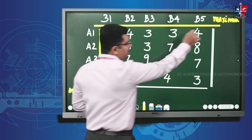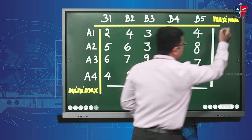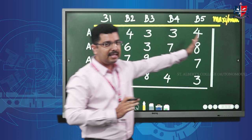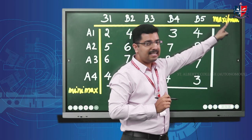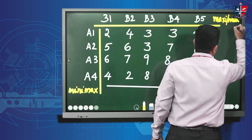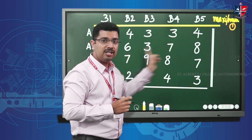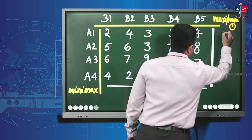First, write 'maximin' on top and 'minimax' on the side. Here's an easy trick: cut the word in half and do the second half first. For 'maximin', do the 'min' part first — find the minimum of each row. The minimum of the first row is two, so write two there.